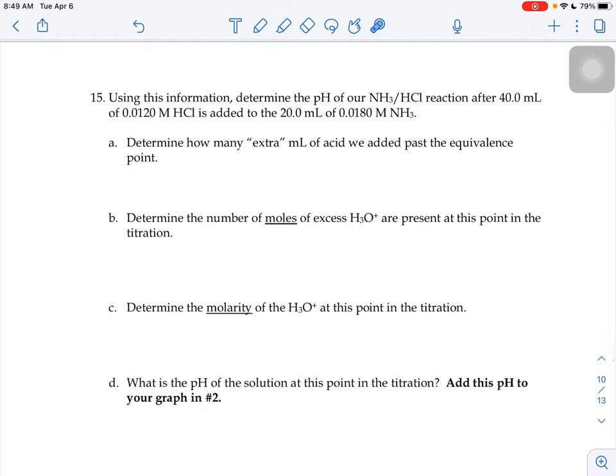So it says using this information what would the pH of our NH3 hydrochloric acid reaction be if we added 40 milliliters of the 0.012 molar hydrochloric acid to our 20 milliliters of ammonia. Well if we added 40 milliliters and we're trying to figure out how much extra we put in past the equivalence point, we figured out in number 12 that it would take 30 milliliters to hit the equivalence point in this reaction.